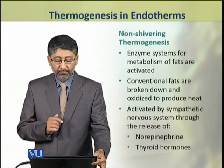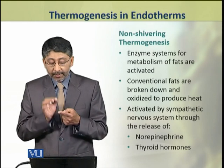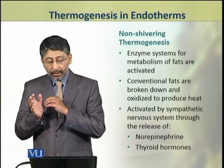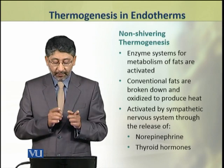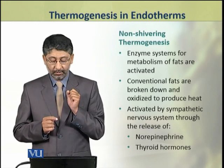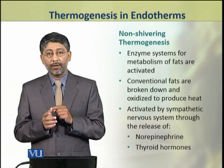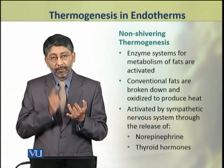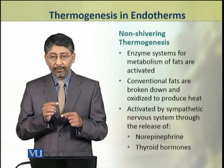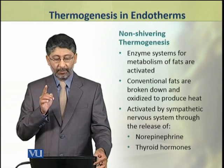During this process, muscle activation causes ATP hydrolysis and energy is released as heat. In non-shivering thermogenesis, enzyme systems are activated which metabolize fats. Conventional fats are broken down and oxidized and heat is produced. This process is activated by the sympathetic nervous system, which causes the release of two types of hormones: norepinephrine and thyroid hormones. Both these hormones activate the breakdown of fats and heat is produced through non-shivering thermogenesis.